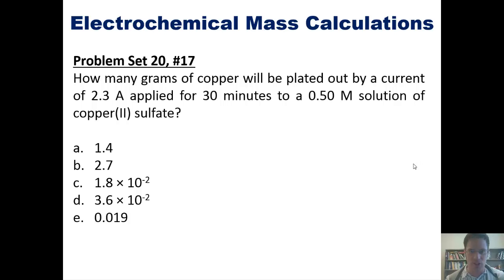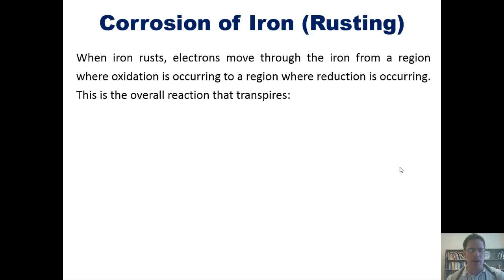I now want to end by teaching you about rusting. Yes, I know you've been waiting for this for a long time. Now, when iron rusts, or other metals as well, electrons move through the iron from a region where oxidation is occurring to a region where reduction is occurring. This is the overall reaction that transpires.